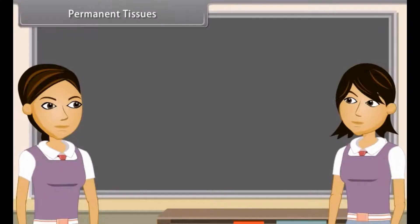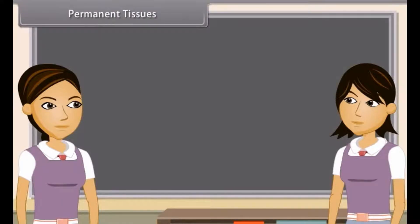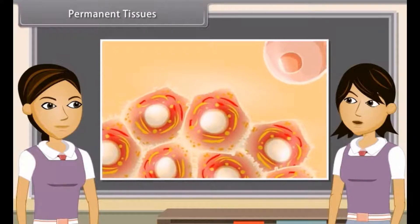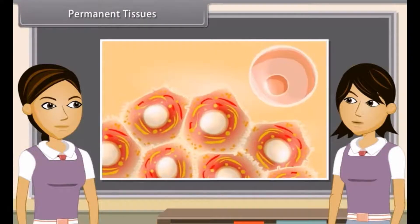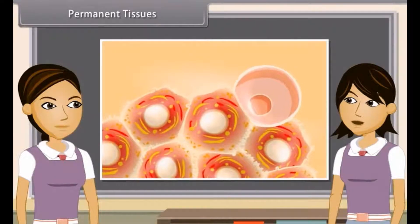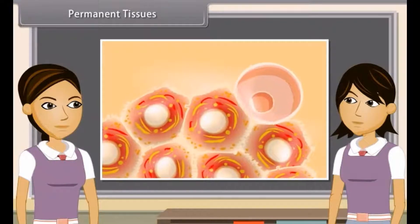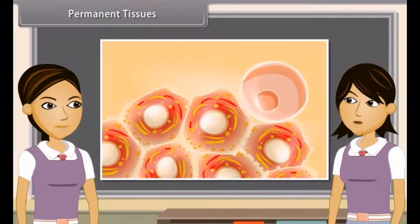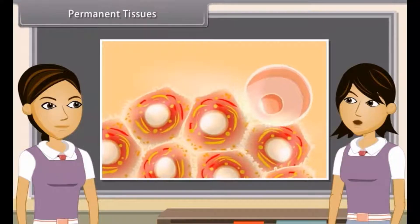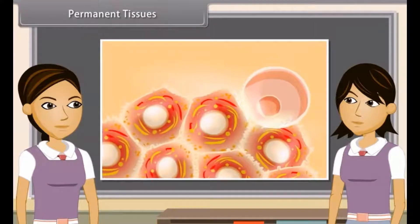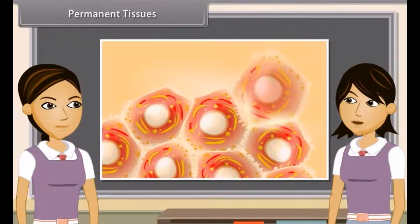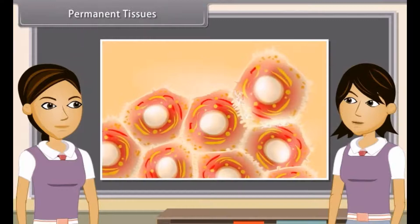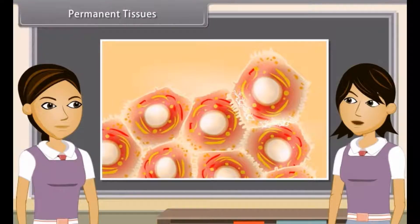After some duration, meristematic tissues lose their ability to divide, take up a specific role, and form a permanent tissue. This process is called differentiation. Differentiated meristematic tissues form different types of permanent tissues.